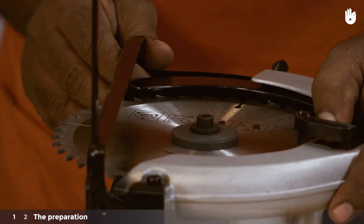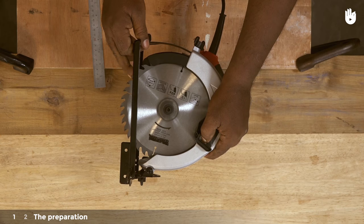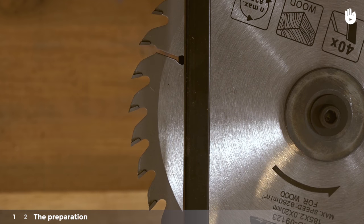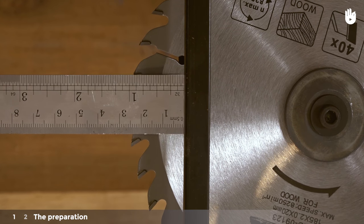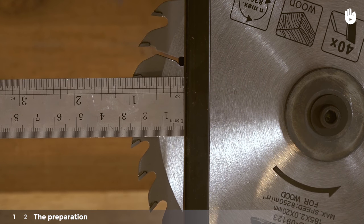Set the saw to the required depth of cut by unlocking the base plate and adjusting how much of the blade protrudes below it. The blade should be five millimeters more than the thickness of the workpiece so it cuts cleanly.